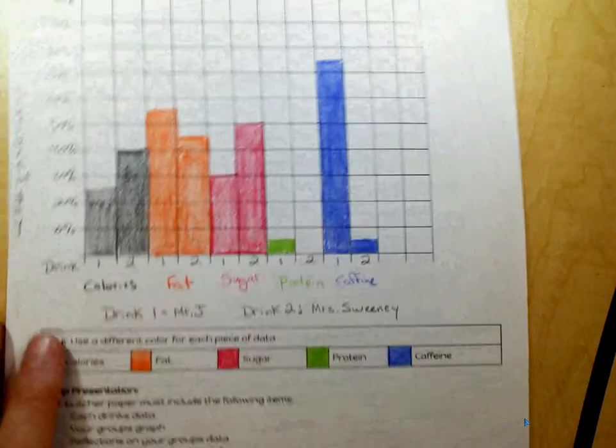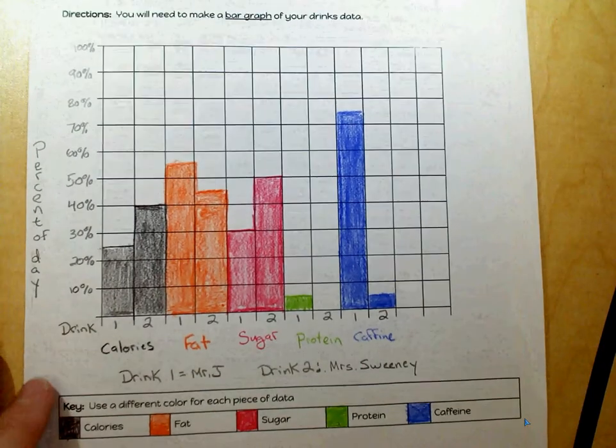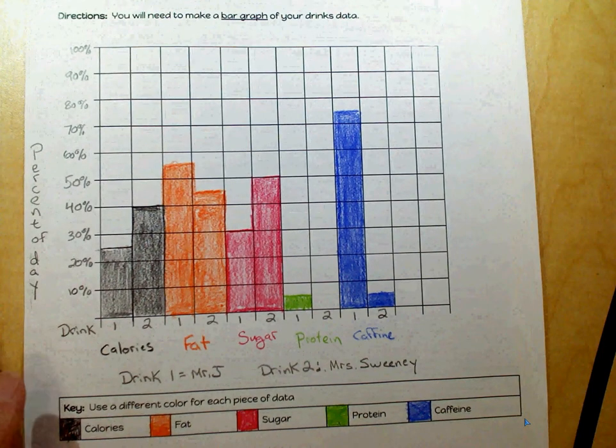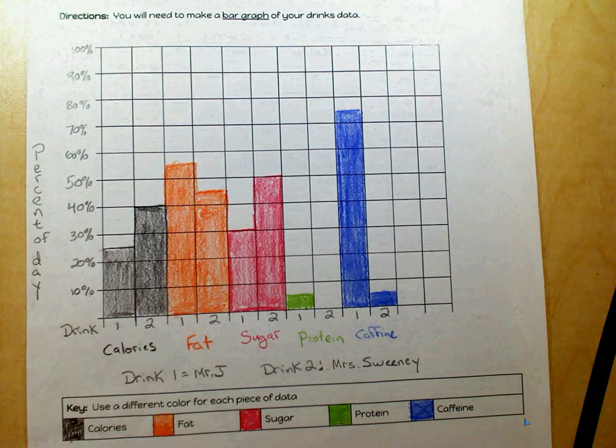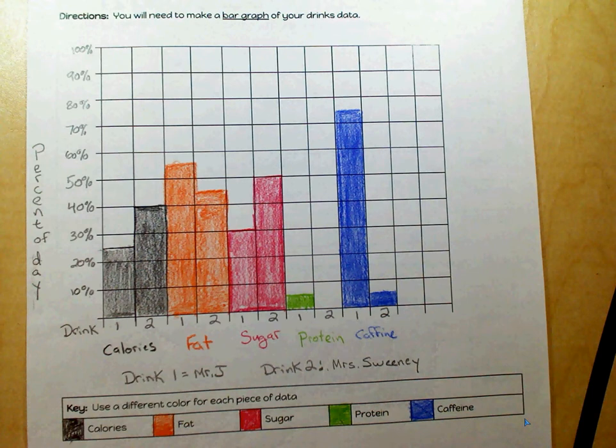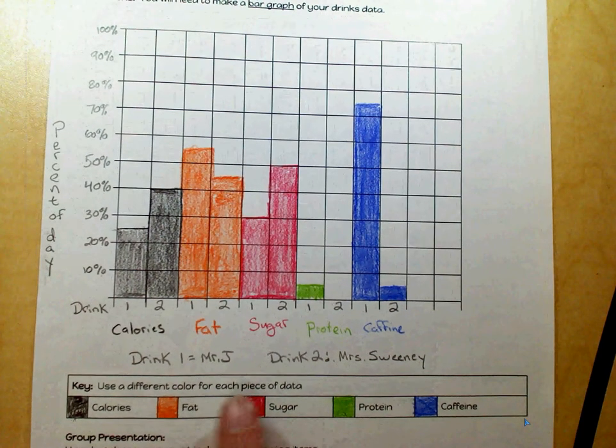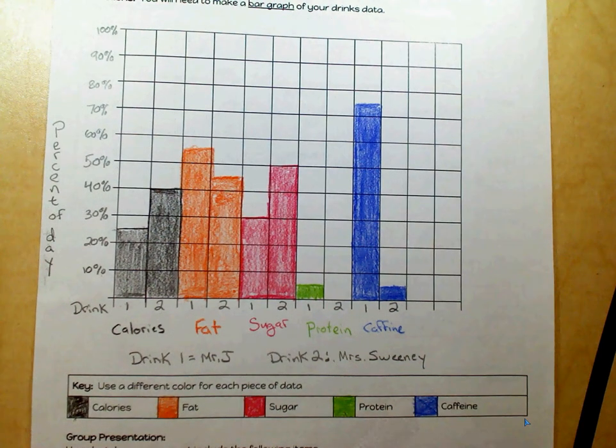Then on the back side, you're going to create a double bar graph that will compare drink one versus drink two in each of the five categories. You need to pick a color for each category in order to put that in there.